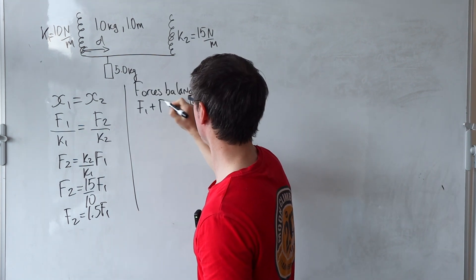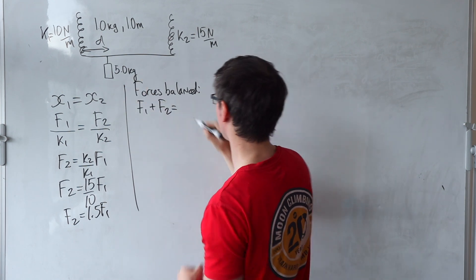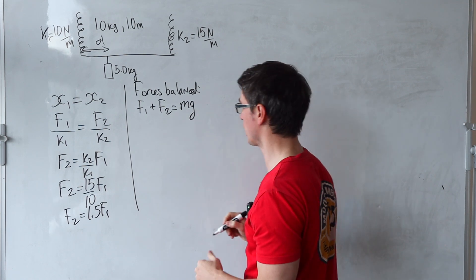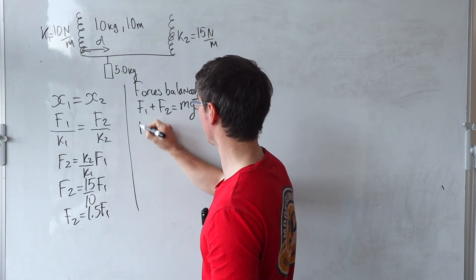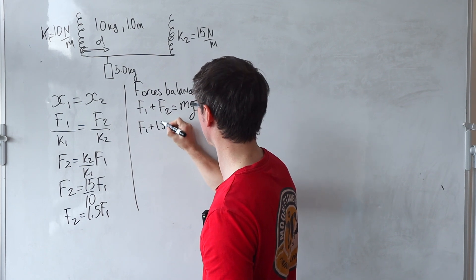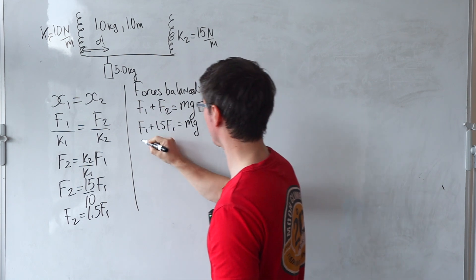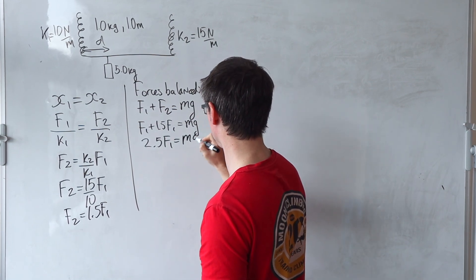F1 plus f2 will have to be equal to the mass of this multiplied by the acceleration due to gravity. Well, we know that f2 is 1.5 times f1, so we can go f1 plus 1.5 f1 is equal to mg. This means that 2.5 f1 is equal to mg.